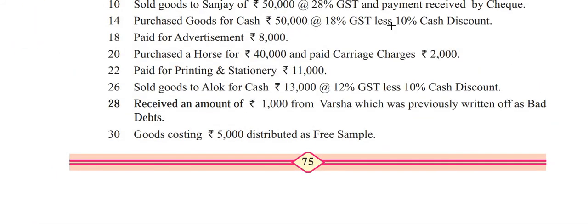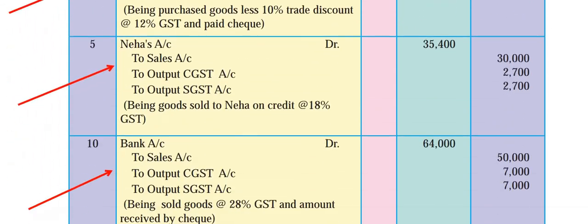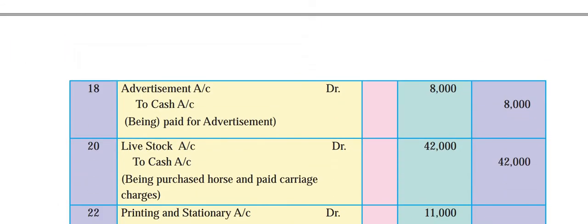The narration is very important - don't forget to write it. 14th April transaction is done. Next is simple: paid advertisement expenses. Advertisement is an expense, cash is going out. So advertisement account debit, cash account credit, 8,000. Being paid advertisement expenses.